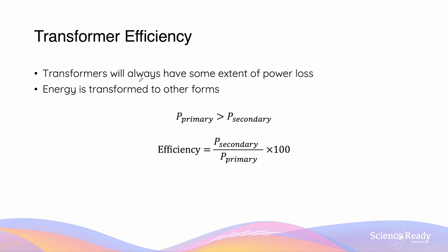We refer to the previous transformer as an ideal transformer because transformers in real life will always have some extent of power loss. When the electrical energy is transmitted from the primary coil to the secondary coil, some amount of energy is always transformed to a different form, which results in power loss.